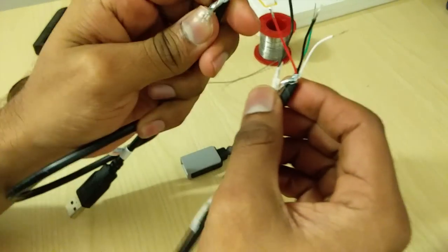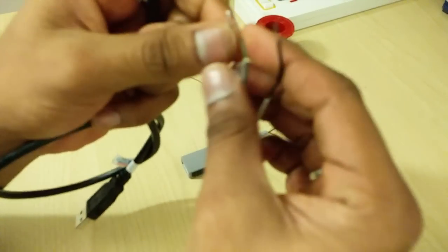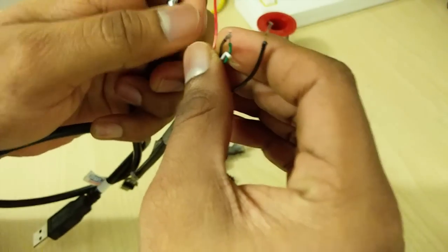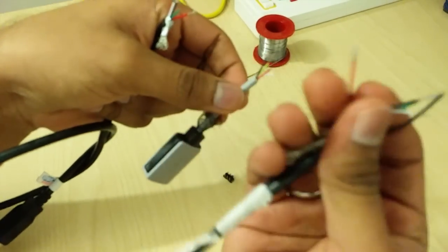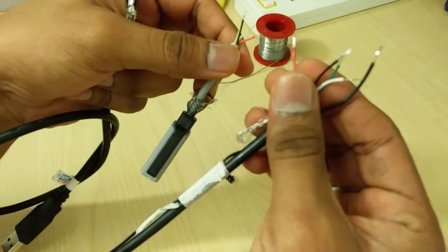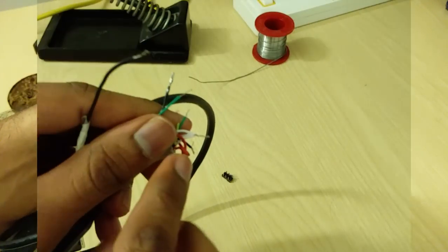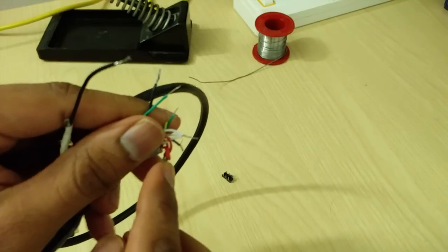What you need to do is attach all the positives together. Attach all the red wires of the female, male and the micro USB and solder it together. I have soldered all the red wires together.